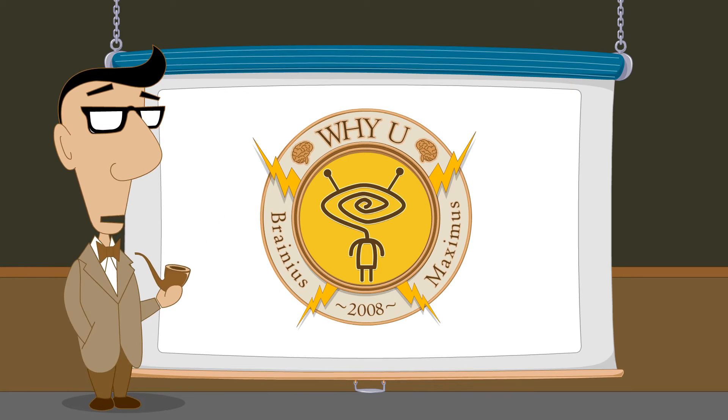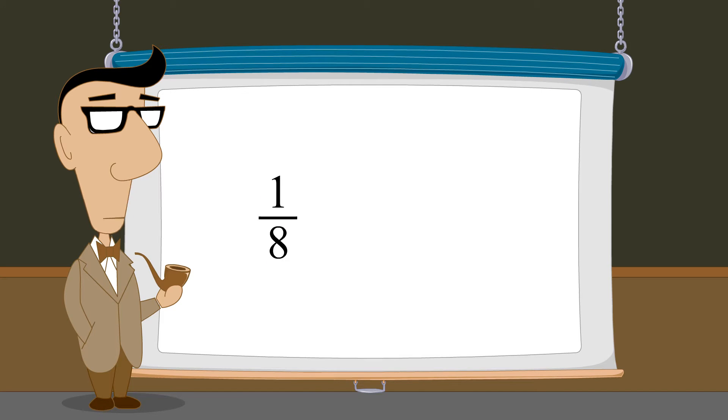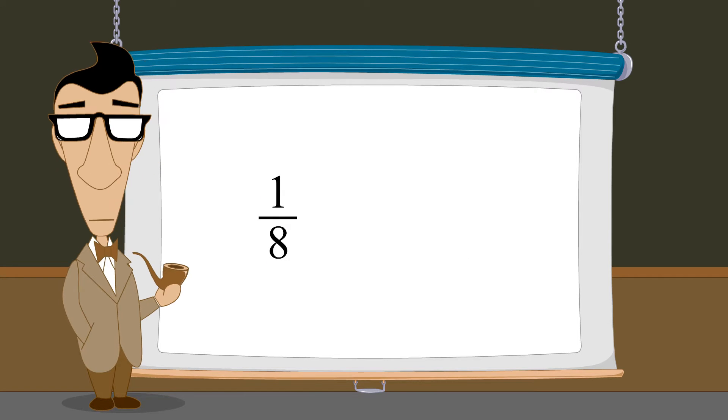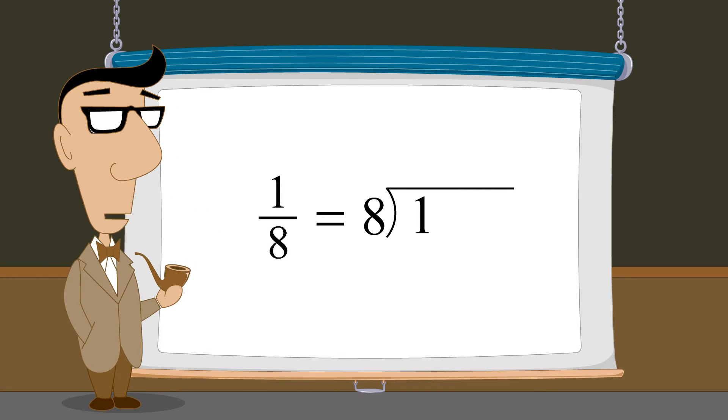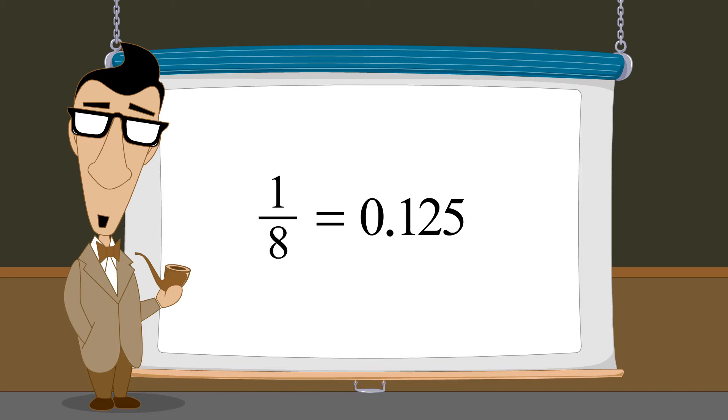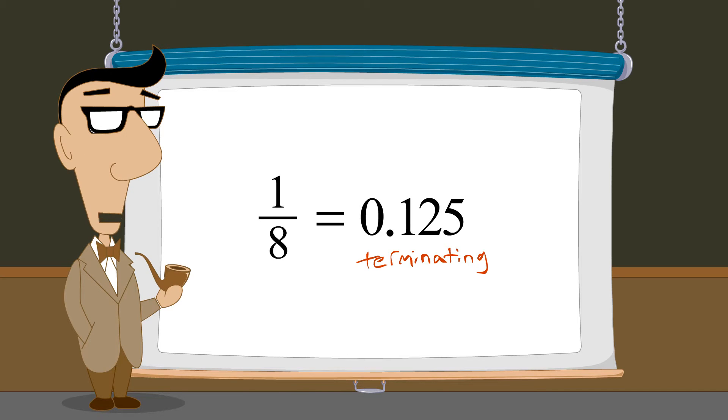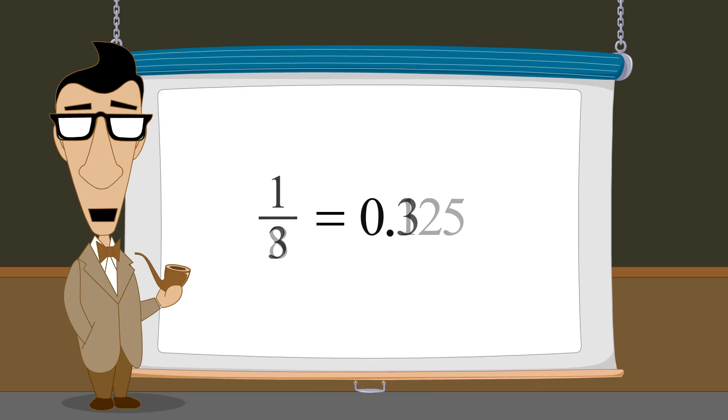In the last lecture, we saw that any fraction can be converted to a decimal number by simply dividing the numerator by the denominator. The result of this division will be a decimal number which is equivalent to the fraction. This decimal number will either terminate, meaning that it can be represented with a finite number of digits, or it will have one or more digits which repeat forever.